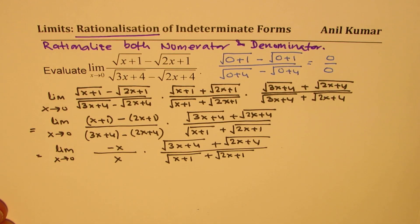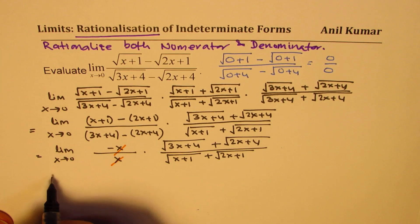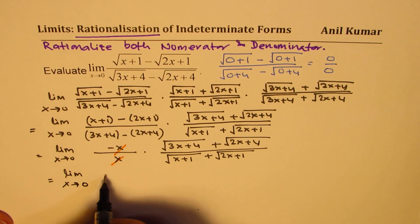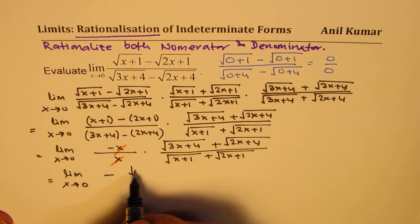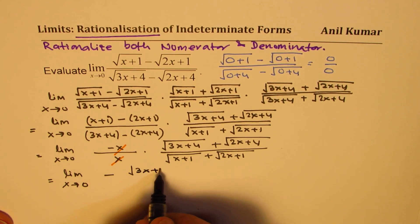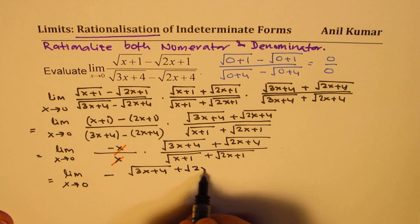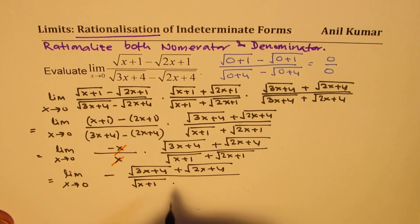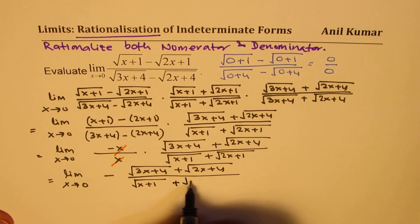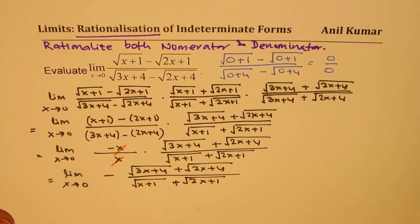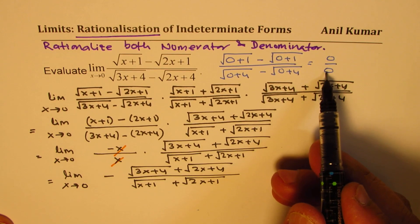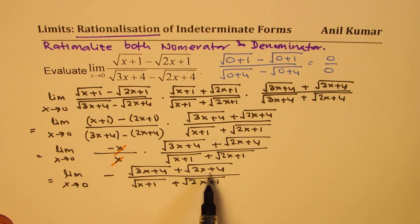Now x and x cancel, so we get negative 1. That gives us limit as x approaches 0 of negative 1 times square root of (3x plus 4) plus square root of (2x plus 4), divided by square root of (x plus 1) plus square root of (2x plus 1). Since we have cancelled the x terms that were making it indeterminate, we can now substitute 0 for x and find the limit.